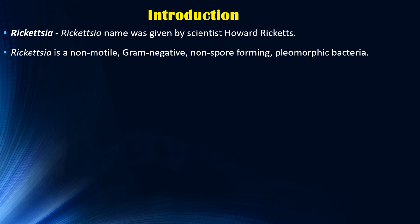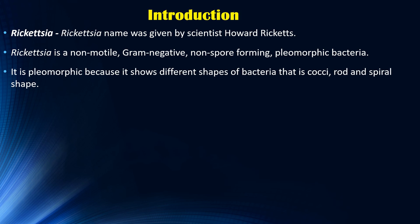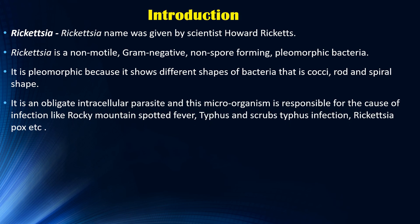What are pleomorphic bacteria? Pleomorphic bacteria are those bacteria which have the ability to change their shape. So here, Rickettsia is a pleomorphic bacterium. It can change its shape into coccal form, rod form, or spiral form. Further, it is an obligate intracellular parasite.